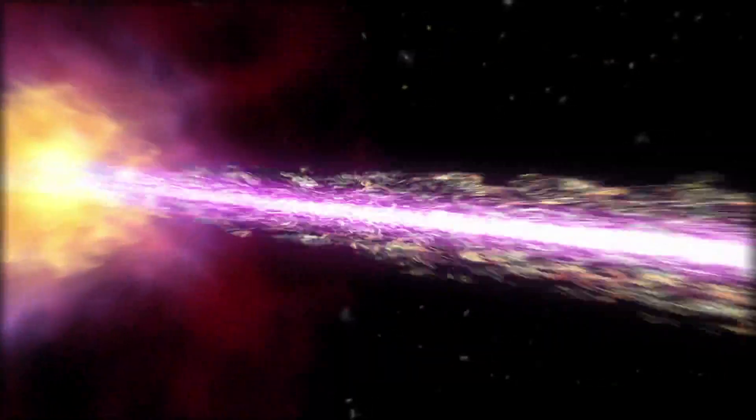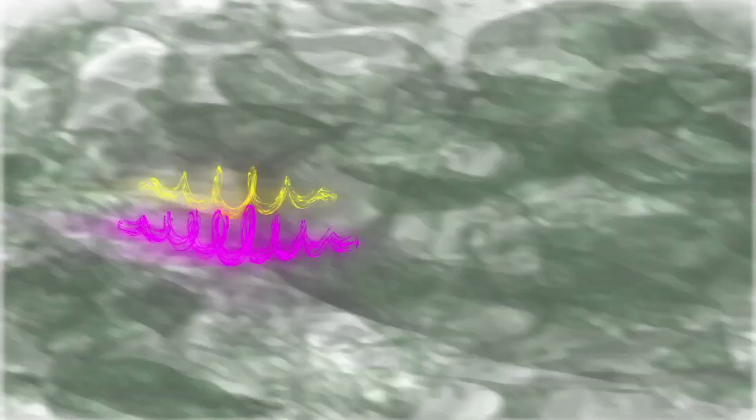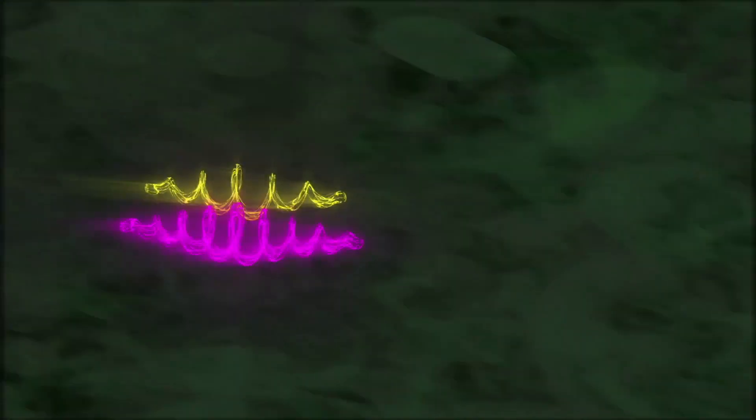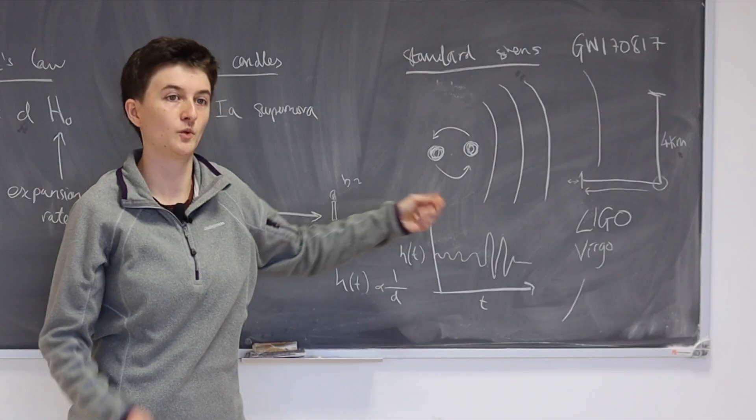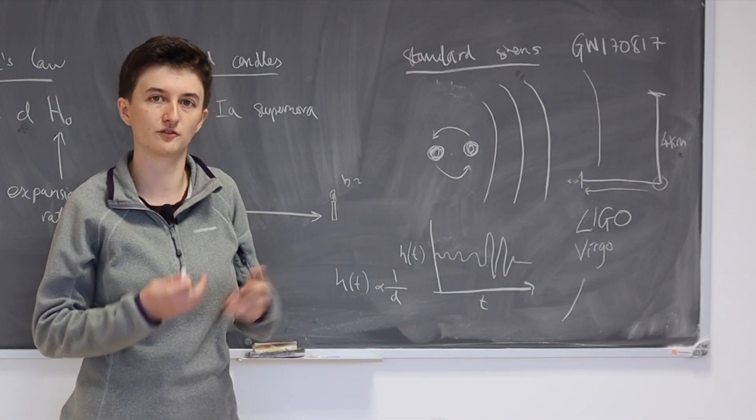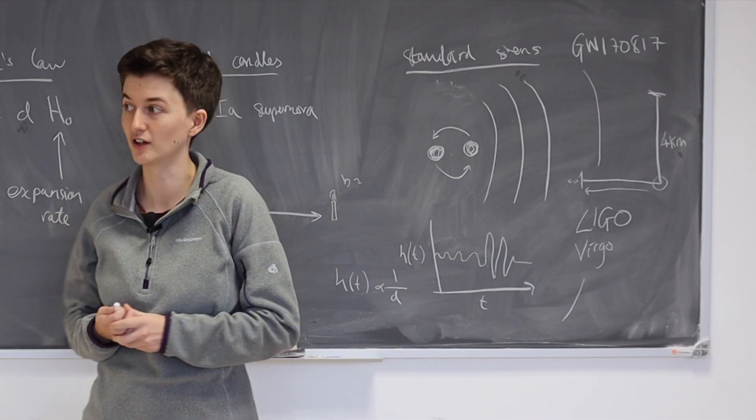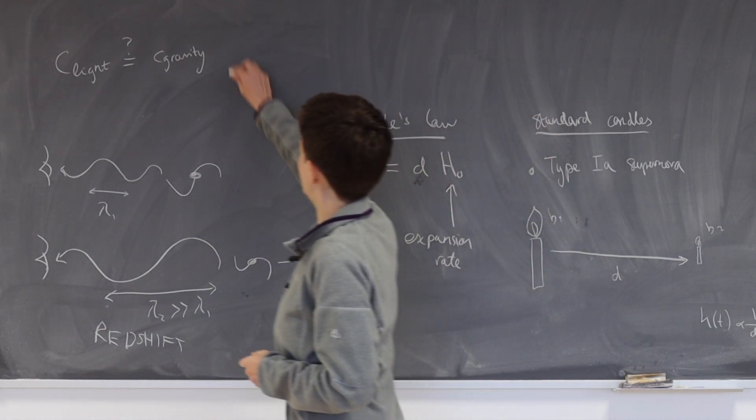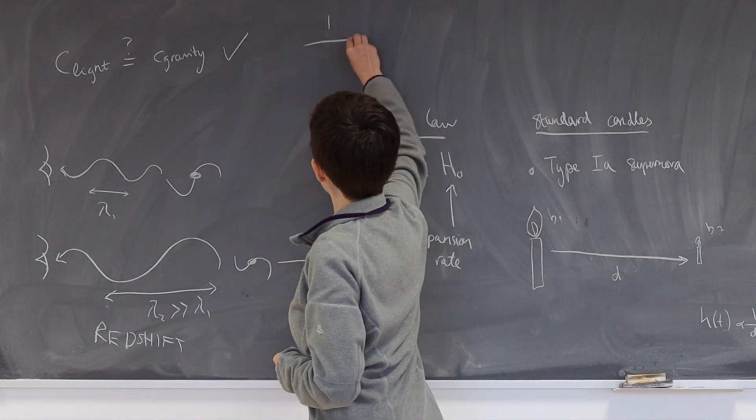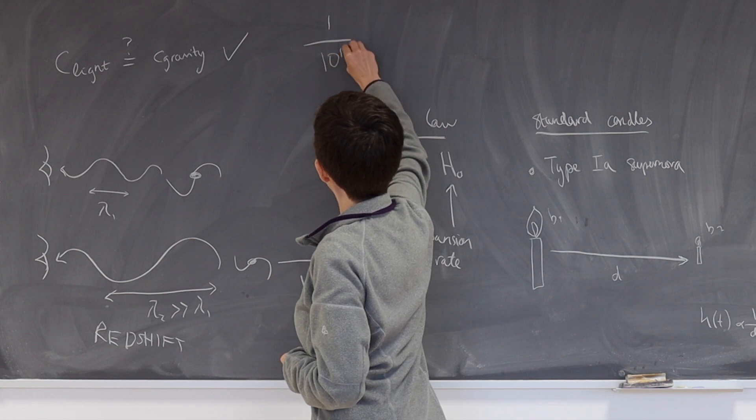If you can think back to what's going on here, we have light being emitted, and we have gravitational waves being emitted from the same object, and travelling the same distance to us here on Earth. So we're able to determine if the speed of gravity is the same as the speed of light. And, well, the answer is yes, they are the same, to roughly one part in 10 to the 15.